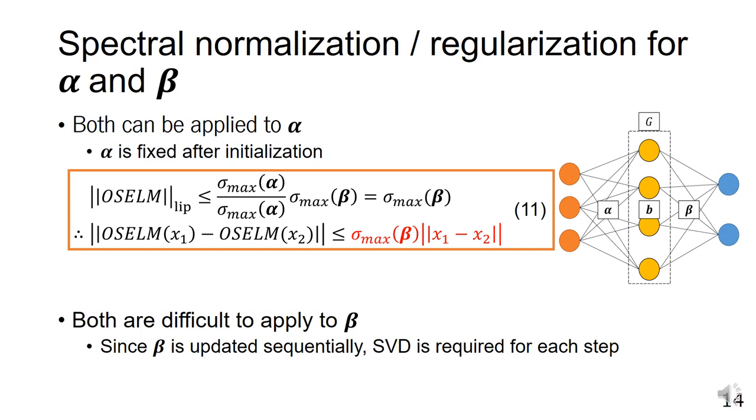For α, both regularization and normalization can be applied since α is fixed once initialized. When normalization is applied, the spectral norm of OS-ELM is restricted to less than or equal to σ_max(β).